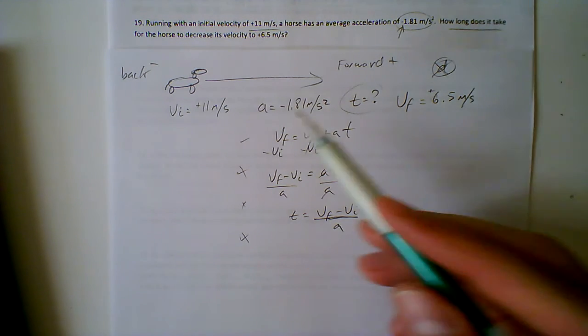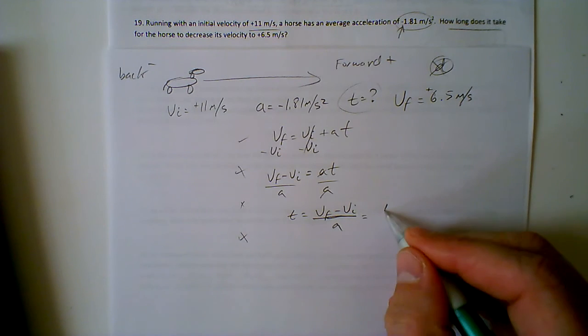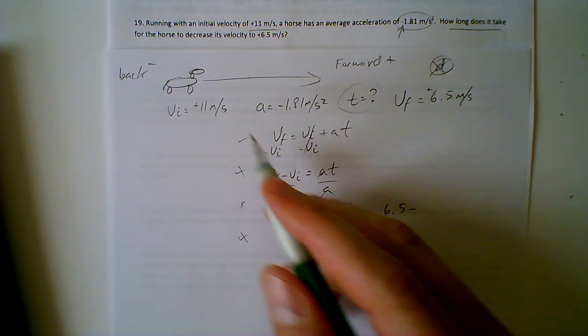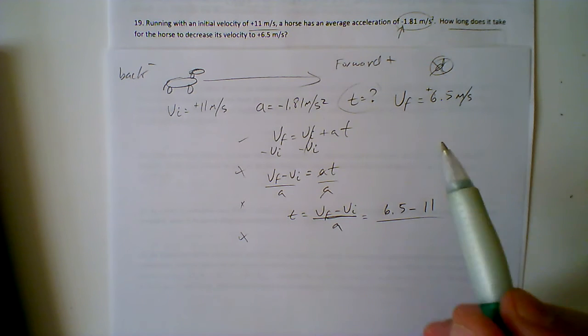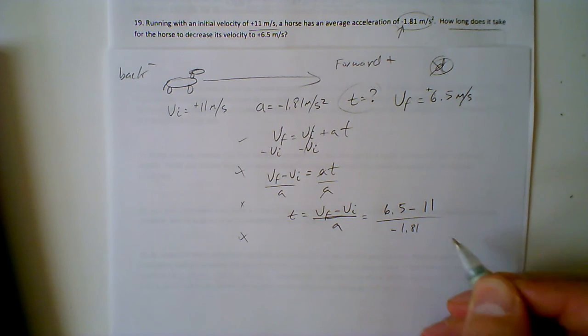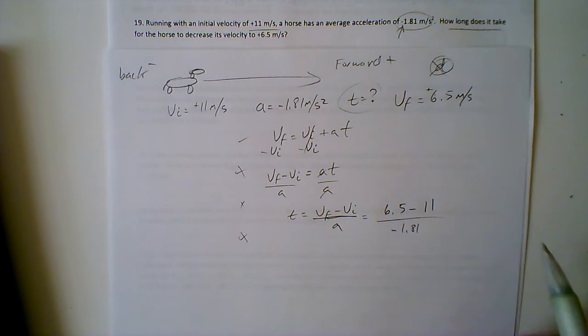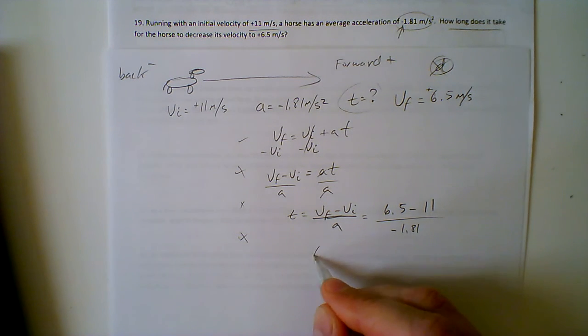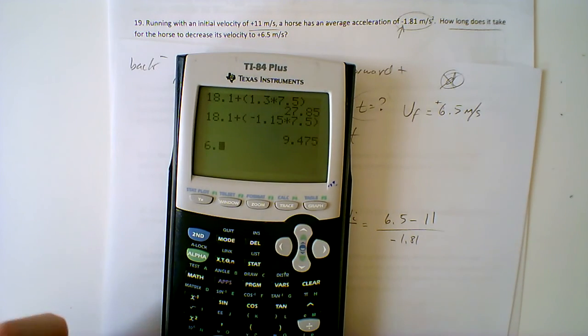We're ready to go ahead and plug our numbers in. So that vf is right here, 6.5, that's where we want to get. Vi, what we started off with, 11. And the deceleration is going to be negative 1.81 meters per second squared. So every second, this is going to get closer to that by this. We're going to go ahead and solve. So grab our calculator. 6.5 minus 11 equals, we get negative 4.5 divided by, let me make that negative, negative 1.81 equals.